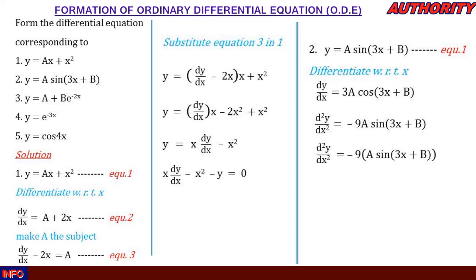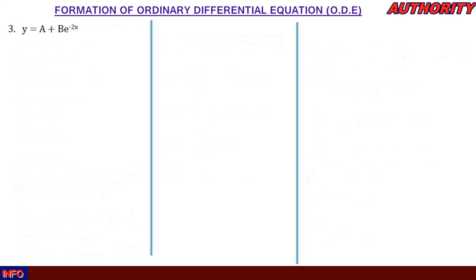The expression a·sin(3x + b) inside the bracket is the same as y from equation 1. Substituting y, we get d²y/dx² = −9y. Taking −9y to the other side: d²y/dx² + 9y = 0. This is the differential equation corresponding to y = a·sin(3x + b).